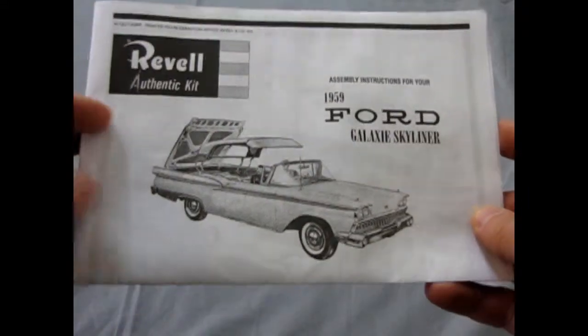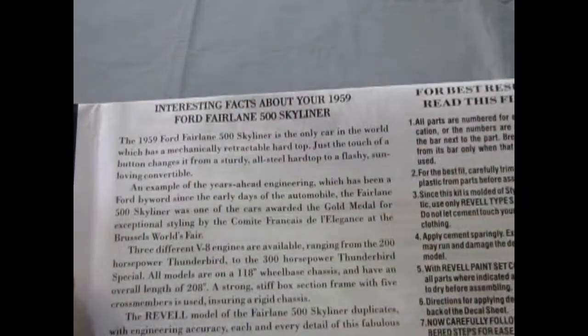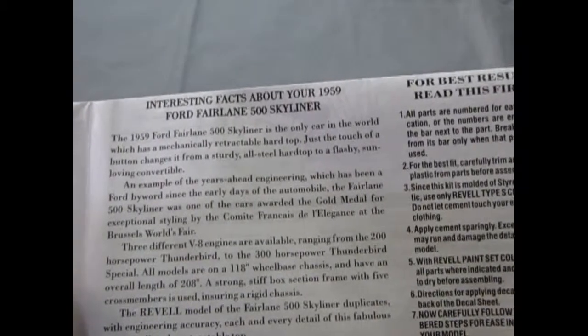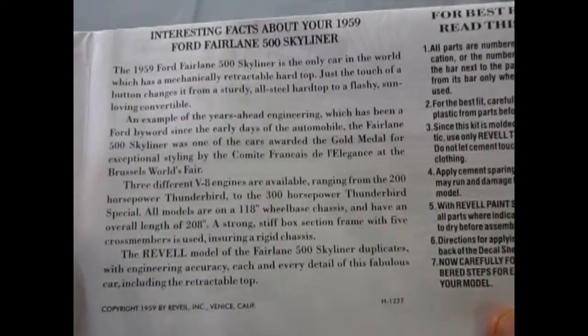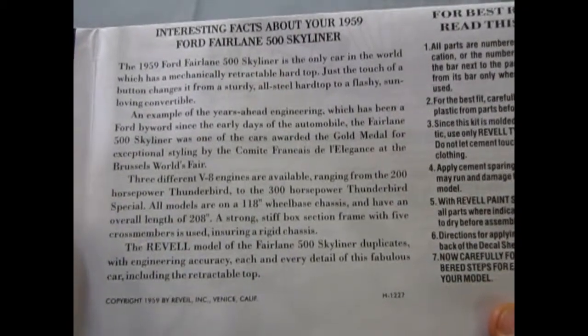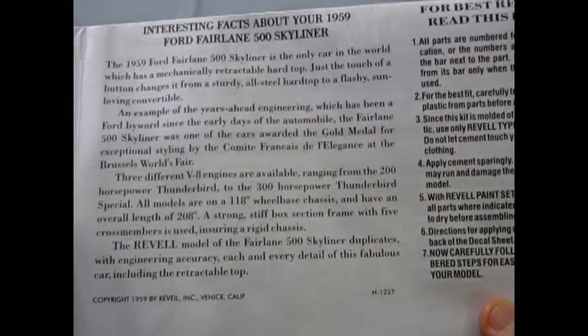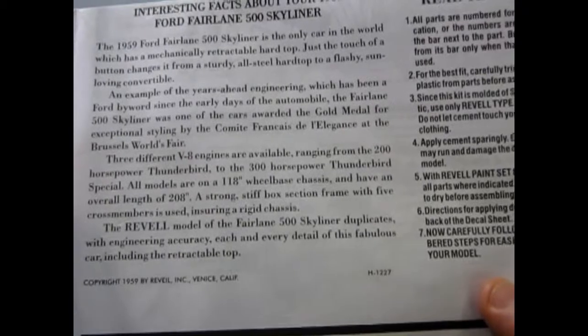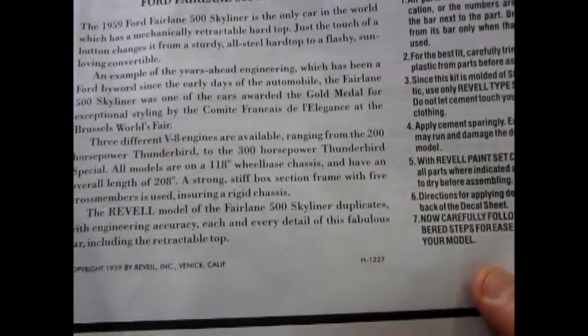So to begin with, we have the instruction sheet. And this is quite a cool thing. Folds out this way. Gives you a great history on it. Interesting facts about your 1959 Ford Fairlane 500 Skyliner. The 1959 Ford Fairlane 500 Skyliner is the only car in the world which has a mechanically retractable hardtop. Just the touch of a button changes it from a sturdy, all-steel hardtop to a flashy, sun-loving convertible. An example of the years ahead engineering, which has been a Ford byword since the early days of the automobile. The Fairlane 500 Skyliner was one of the cars awarded the gold medal for exceptional styling by the Comité Français d'Elegance at the Brussels World Fair. Three different V8 engines are available ranging from the 200 horsepower Thunderbird to the 300 horsepower Thunderbird Special.